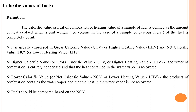It is usually expressed as gross calorific value (GCV), which is the overall calorific value, also called higher heating value (HHV); and net calorific value (NCV), also called low heating value (LHV). For higher calorific value, we call it gross calorific value or higher heating value.